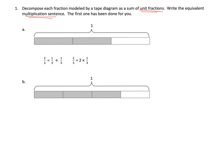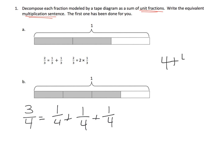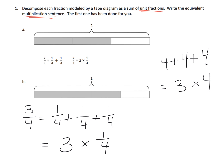So let's take a look at what we've got here. This is three-fourths, and we know it's three-fourths because our whole has been cut into four pieces and three of them are shaded. As a sum of unit fractions, that's going to be one-fourth plus one-fourth plus one-fourth. Just like four plus four plus four is the same thing as three times four, here you've got one-fourth plus one-fourth plus one-fourth, so this is the same thing as three times one-fourth.